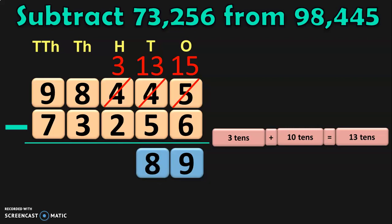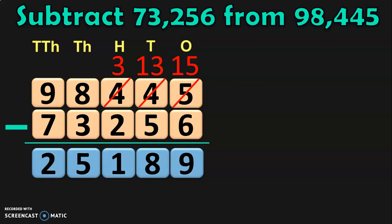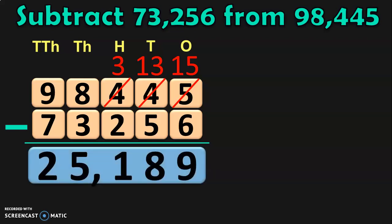Next, move on to the hundreds place for subtraction. Here, 3 minus 2. You can do the subtraction and you get the answer 1. Next, in the thousands place, you have 8 minus 3. 8 minus 3 is 5. Next, move on to the ten thousands place where you have 9 minus 7. 9 minus 7 is 2. So, the subtraction of the two numbers, 98,445 minus 73,256, is giving you the difference of 25,189.